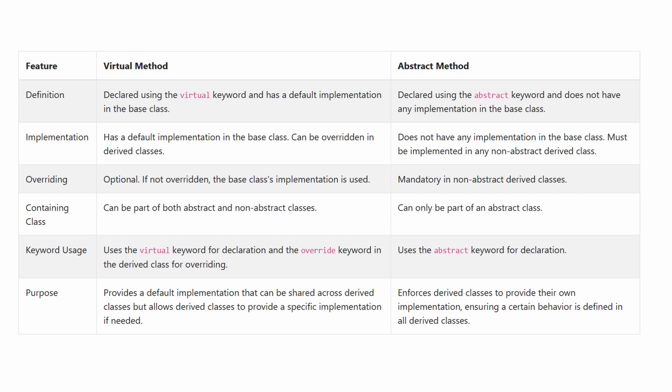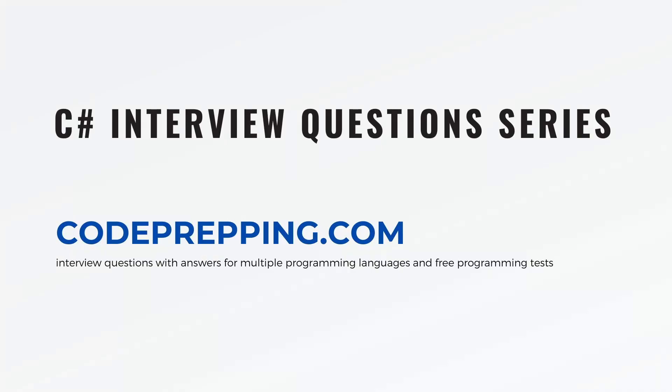You can pause the screen to see a full comparison of virtual and abstract methods in C#. The main points to remember: overriding a virtual method is optional — if not overridden, the base class implementation is used. On the other hand, abstract methods must be overridden in derived classes. Virtual methods can be part of both abstract and non-abstract classes, while abstract methods can only be part of an abstract class. Finally, the purpose of a virtual method is to provide a default implementation that can be shared across derived classes, while the purpose of an abstract method is to enforce derived classes to provide their own implementation. And that was a quick tutorial on virtual and abstract methods in C#.